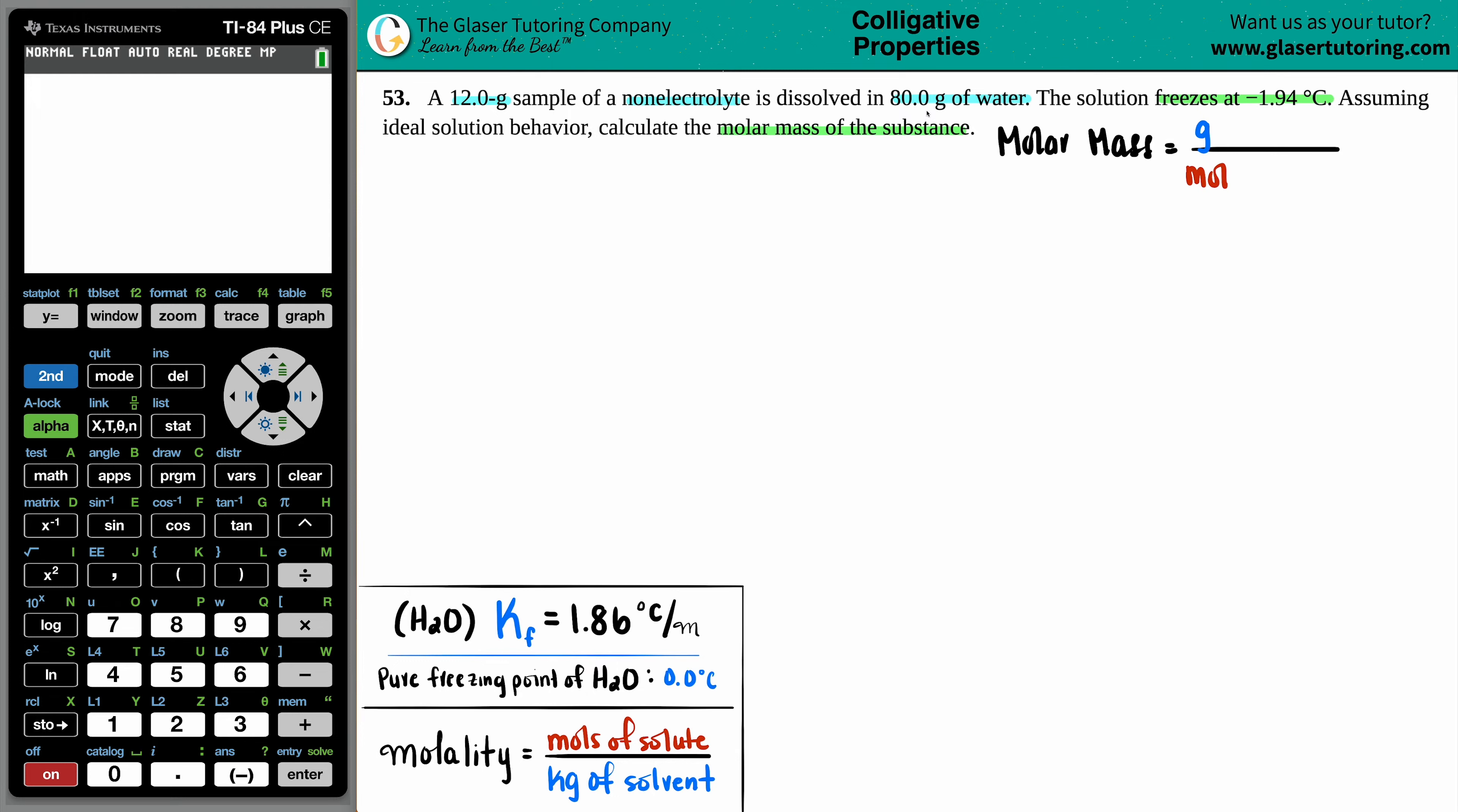They're just saying calculate the molar mass of this certain substance. We don't really know what this substance is, whether it's a compound, a molecule, or just an element. All that they told us was that this substance is a non-electrolyte and it's being dissolved in water.